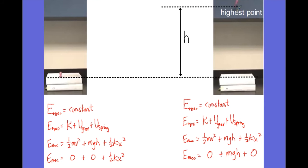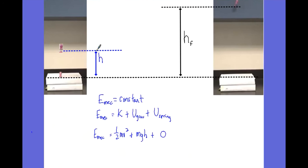When the spring launches the toy to its highest point, the velocity is briefly zero so kinetic energy is zero. Gravitational potential energy is now mgh, and the spring is no longer compressed so spring PE is zero. All mechanical energy now exists solely as gravitational potential energy, but the total amount is the same. So one-half kx squared in the compressed picture equals mgh at the highest point. At an intermediate location, the toy has both height and velocity, so some energy is in kinetic energy and some in gravitational potential energy, though the total mechanical energy hasn't changed.